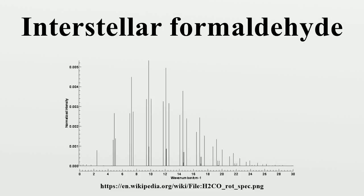Interstellar formaldehyde was first discovered in 1969 by L. Snyder et al., using the National Radio Astronomy Observatory. Formaldehyde was detected by means of the 111 to 110 ground-state rotational transition at 4,830 MHz.